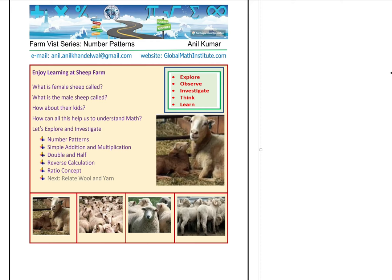Let's begin with the farm where we have many sheep. Do you know what a female sheep is known as? How about the male sheep, and how do we call the kid of a sheep? It is only the male sheep which will always have horns. The female matured sheep may not have horns — some of them might, but most of them don't.